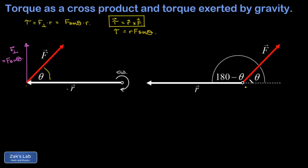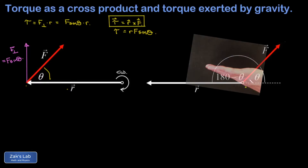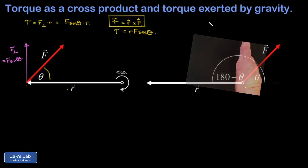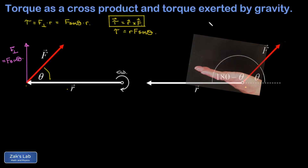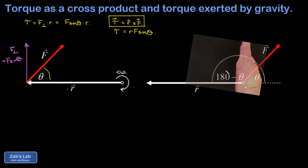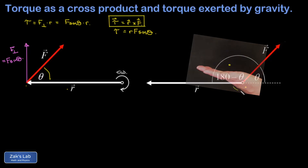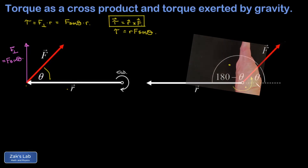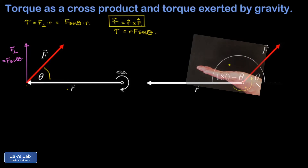My favorite way to apply the right-hand rule is to put your fingers in the direction of the first vector, r, then sweep your fingers out to the direction of the second vector through an angle less than 180 degrees — this angle, rather than going all the way through the angle greater than 180 degrees. If you do this sweeping motion, your thumb is forced to point into the page.